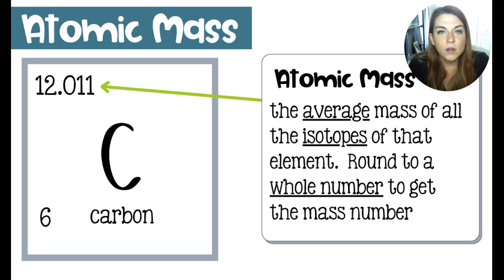The atomic mass rounded to a whole number will represent the mass number. So if I take the 12.011 and round that to 12, the closest whole number, then that is going to represent the mass number of the average carbon. That means that the average carbon will have six protons and six neutrons totaling 12 things in the nucleus.